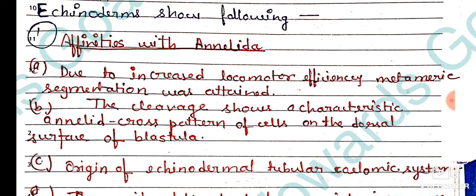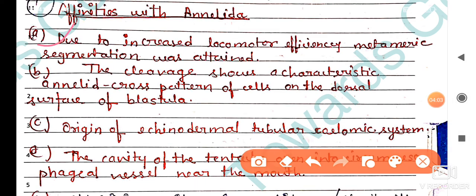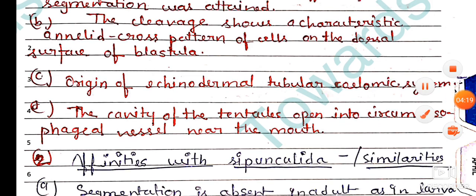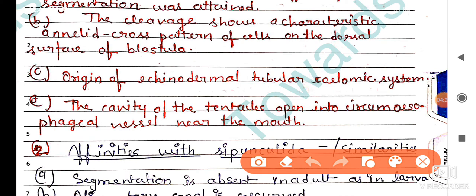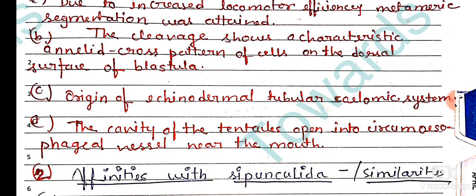Echinoderms show the following affinities with Annelida. First, due to increased locomotor efficiency, metamerism or metameric segmentation was attained. Second, the cleavage shows a characteristic annelid cross pattern of cells on the dorsal surface of the blastula. Third, the origin of the echinoderm tubular coelomic system — the cavity of the tentacles opens into the circumoesophageal vessel near the mouth — is similar to annelids.